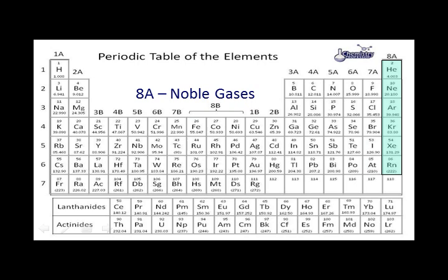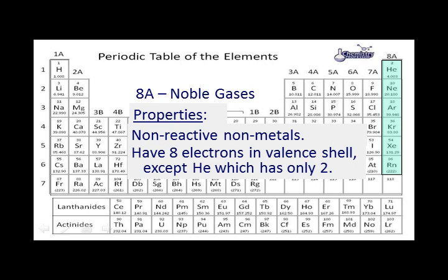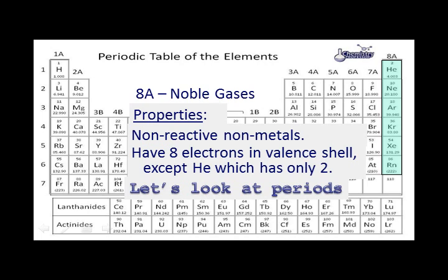Next, we have the noble gases. The noble gases have been called the inert gases, but that is definitely a misnomer. They are not as reactive as many of the others, but we can cause them to react. Their properties: for the most part they are nonreactive, but they can be made to react under some pretty strong circumstances. They have 8 electrons in the valence shell, with the exception of helium, which only has 2.